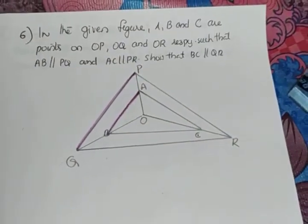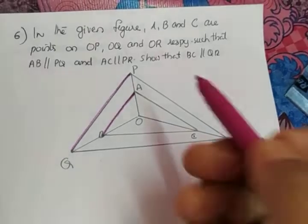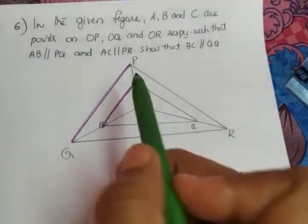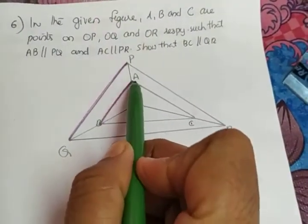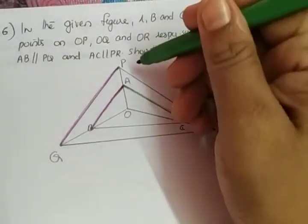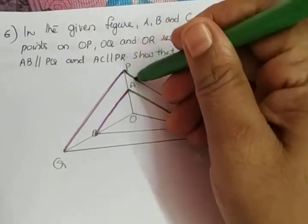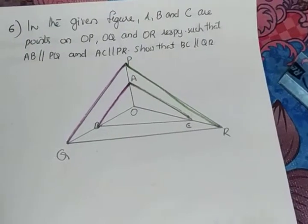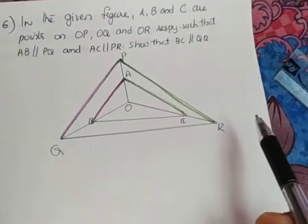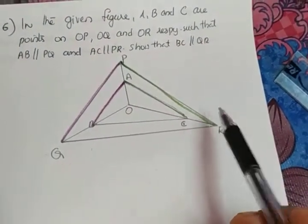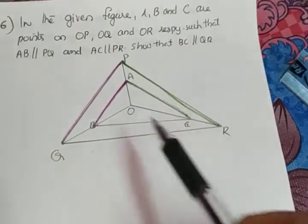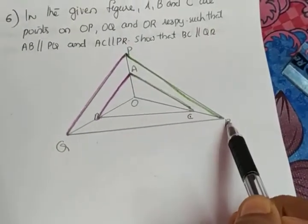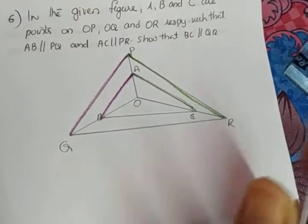The second condition given is AC parallel to PR. AC is this line parallel to PR, and PR is this line. What we have to prove is that BC is parallel to QR — BC is this line parallel to QR. That is what we have to prove.